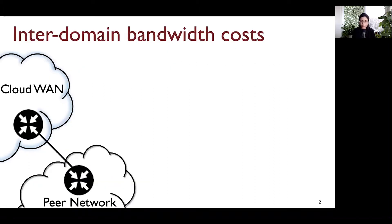In this work, our goal is to reduce the inter-domain bandwidth costs incurred by a cloud provider. I'll first explain what I mean by inter-domain bandwidth. Here on this slide, I have the edge router of a cloud wide-area network connecting with the edge router of its BGP peer. Inter-domain traffic from the cloud is the traffic exchanged between the cloud and its BGP peers. This exchange is bidirectional — both inbound and outbound.